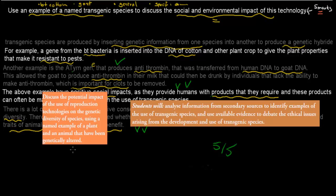Where do these marks come from? They came from these dot points: Discuss the potential impact of reproductive technologies on genetic diversity using named examples of a plant and animal that have been genetically altered. Students will analyze information to identify examples and uses of transgenic species. And use available evidence to debate the ethical issues arising from the development and use of transgenic species. We named one and talked about the negative and positive consequences from this dot point. I hope that was useful.